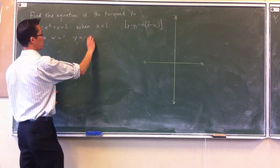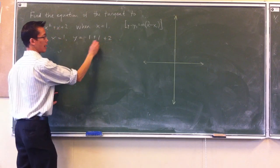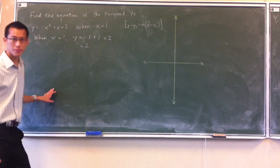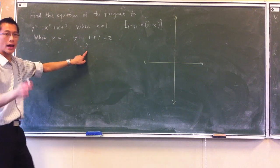So I've got minus 1, plus 1, plus 2. These two cancel out so I just end up with 2. So here's my x1, here's my y1. Now, how do I work out m? That's where the calculus comes in, so I'm going to need to differentiate this function.